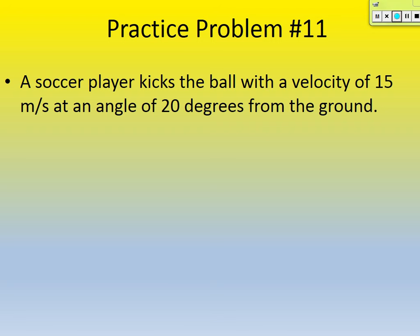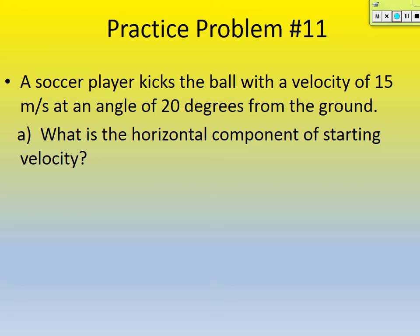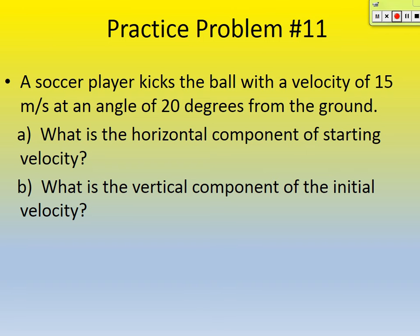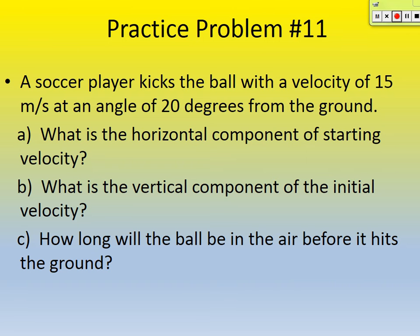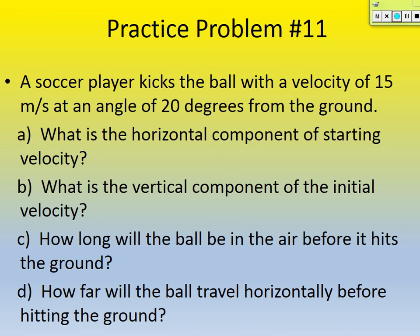Practice problem number 11. A soccer player kicks the ball with a velocity of 15 meters per second at an angle of 20 degrees from the ground. Part A: what is the horizontal component of its starting velocity? Part B: what is its vertical component of starting velocity? Part C: how long will the ball be in the air before it hits the ground? And Part D: how far will the ball travel horizontally before it hits the ground? Draw a picture, find the initial horizontal and vertical velocities using trigonometry, break motion into horizontal and vertical, and list all the variables.